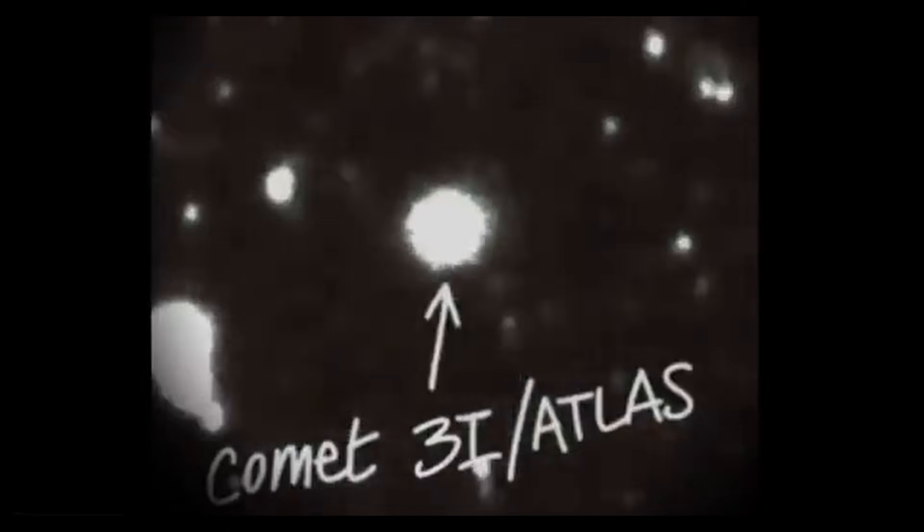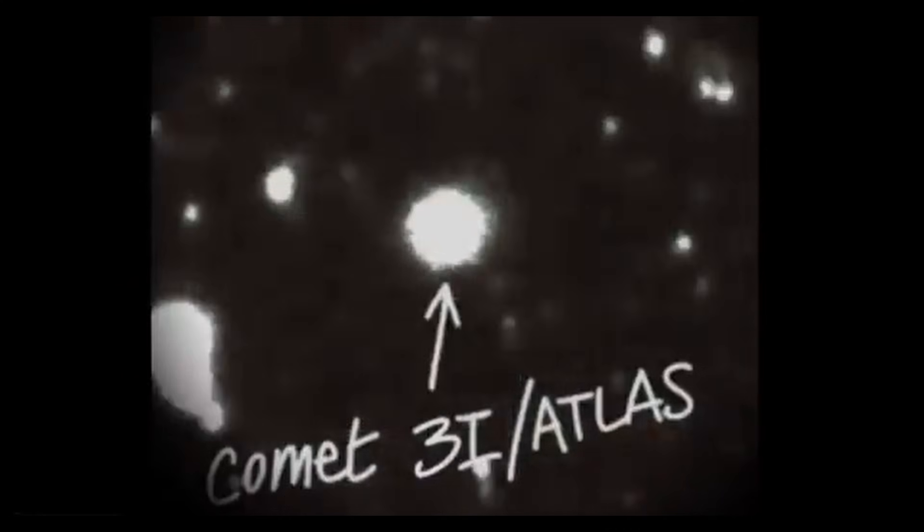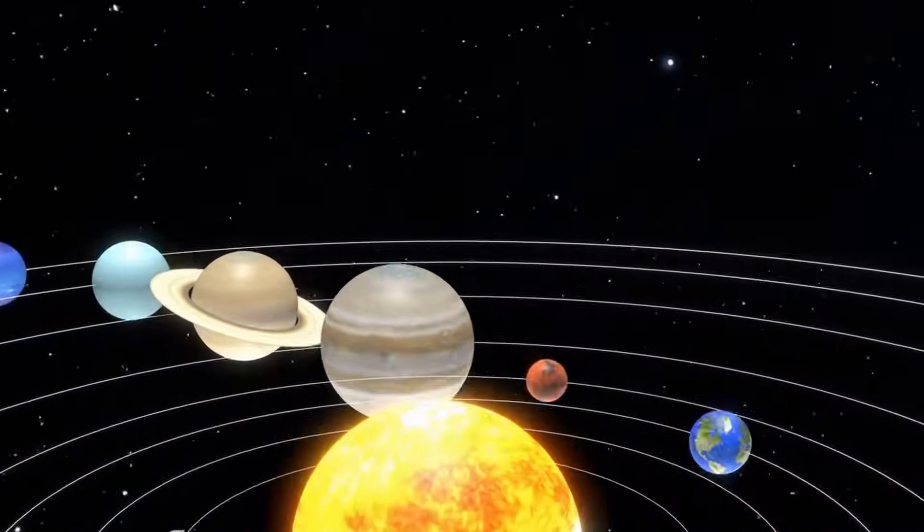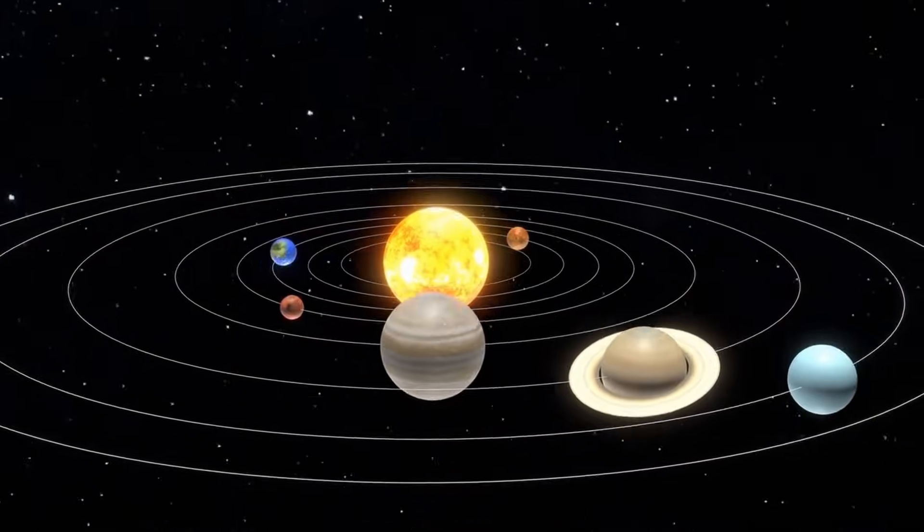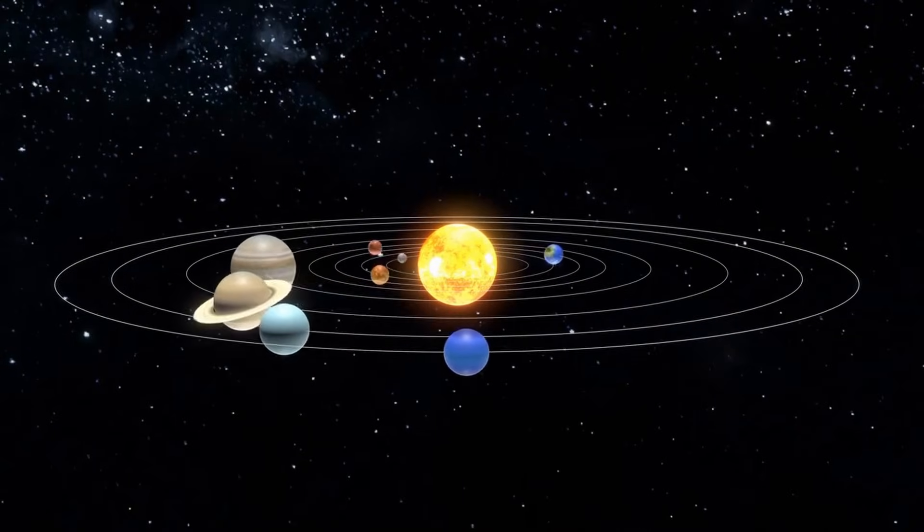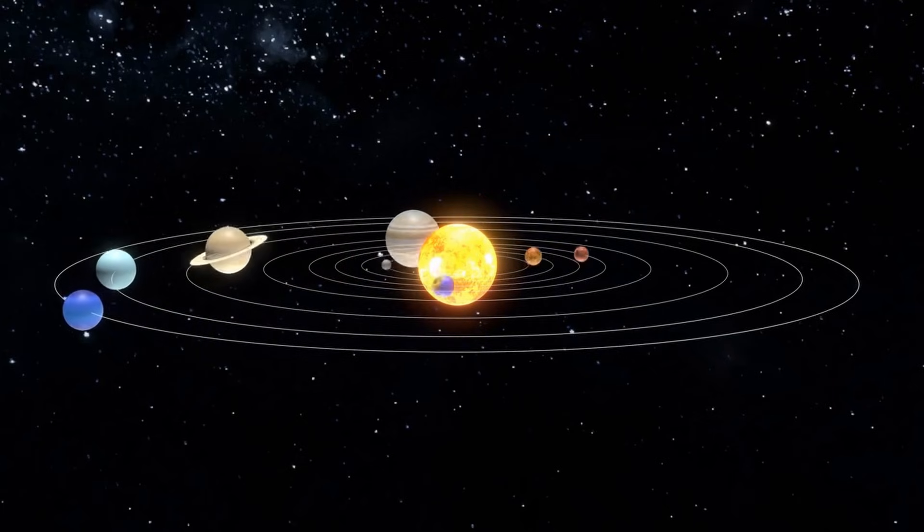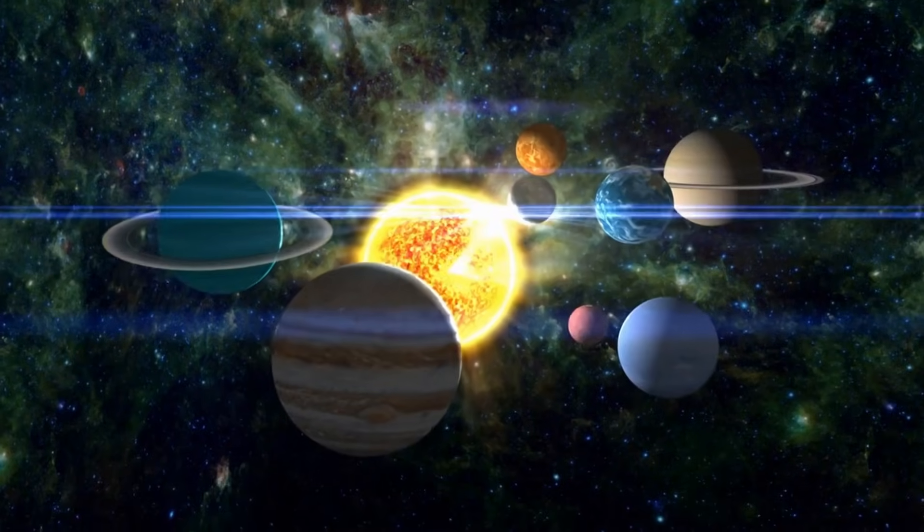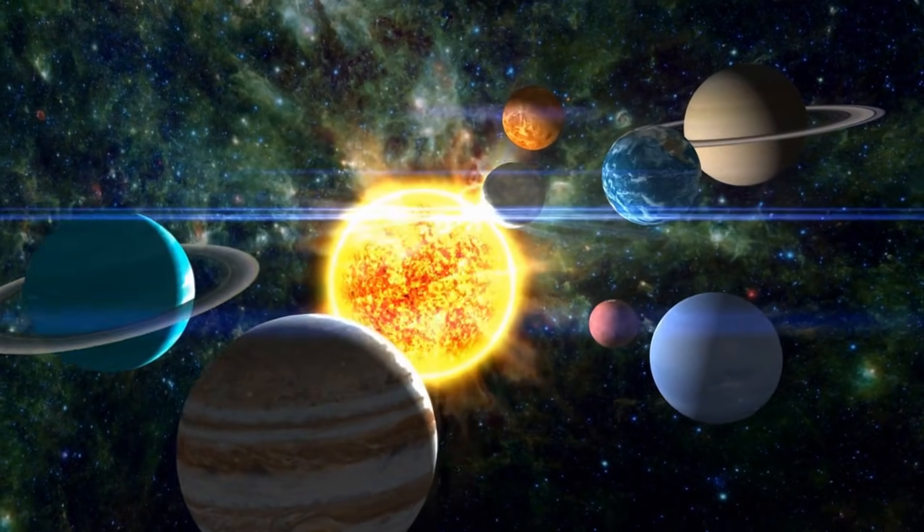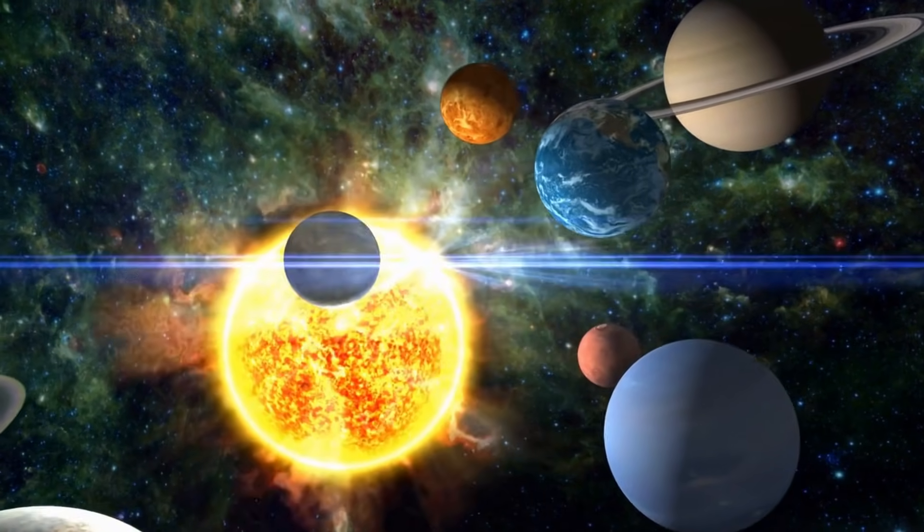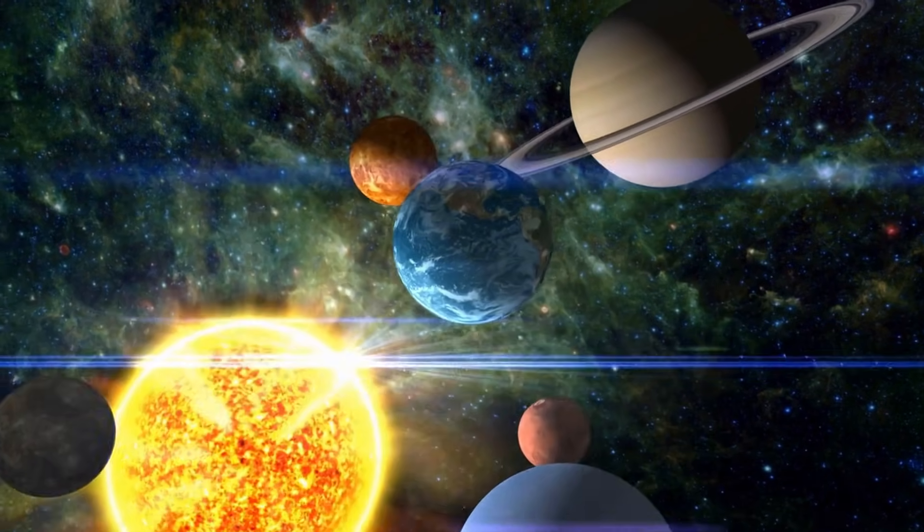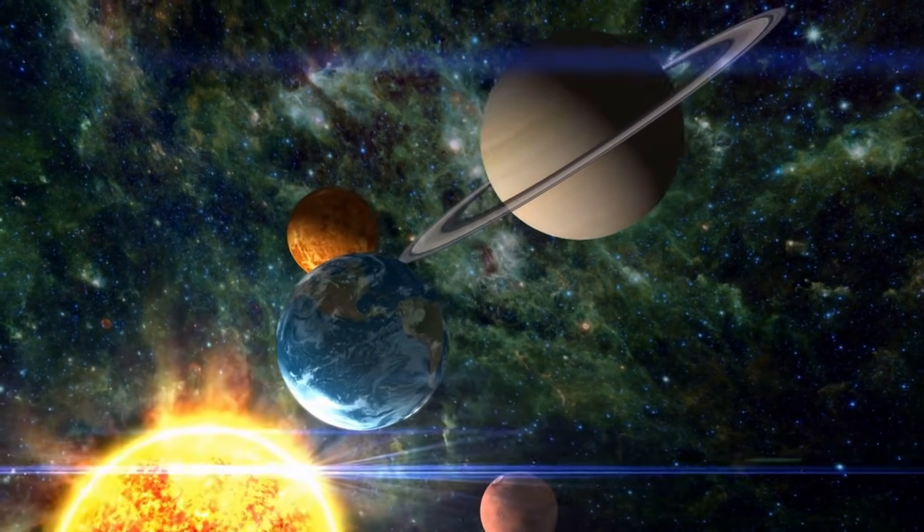Let's zoom out for a second. We've been tracking this object for months. Watching it brighten, watching it fade, watching it hold structure longer than expected. Watching its trajectory bend toward Jupiter with precision that makes orbital mechanics people uncomfortable. And now, we know it's not broadcasting in the radio spectrum, at least not in any way we can detect with current technology. So where does that leave us? Option 1: It's exactly what NASA says. A natural interstellar comet with unusual composition and behavior that we don't fully understand yet because we've only ever studied two interstellar objects in human history. Option 2: It's something else. Something that either doesn't use radio or uses it so efficiently we can't pick it up. Something quiet. Something deliberate.